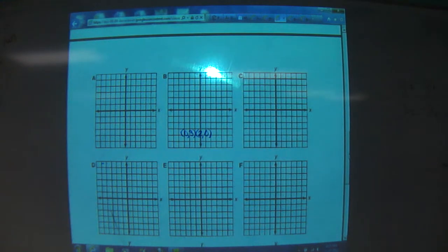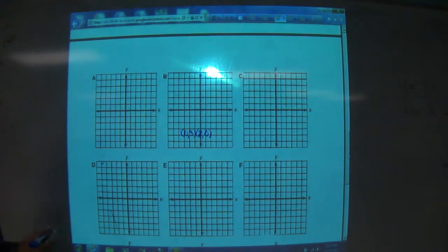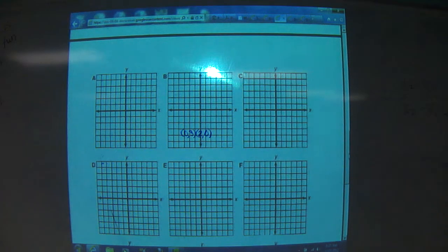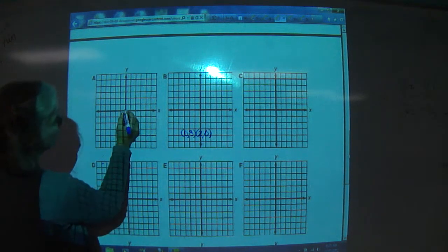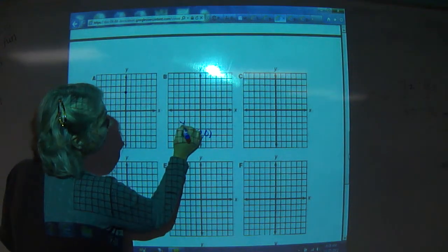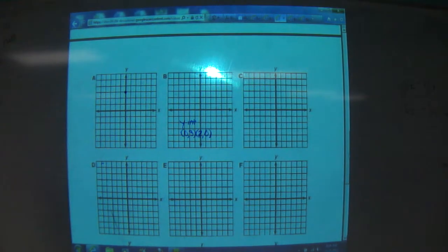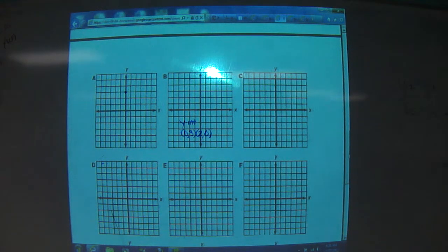So on letter A, we're going to graph 0, 3, 2, 0. So, 0, 3. 0 means we're not going to go left or right on the x-axis. So we're going to go up 3. 1, 2, 3. This is the y-intercept because it crosses the y-axis. So if x is 0, you have your y-intercept.